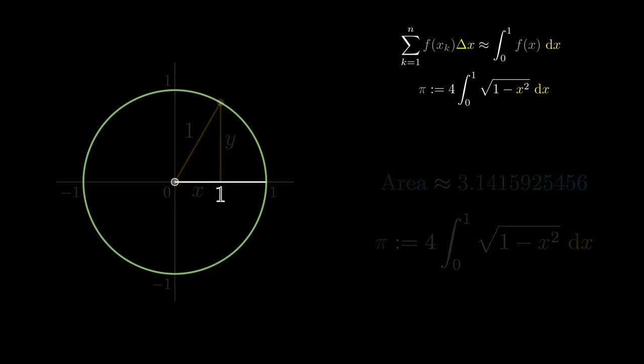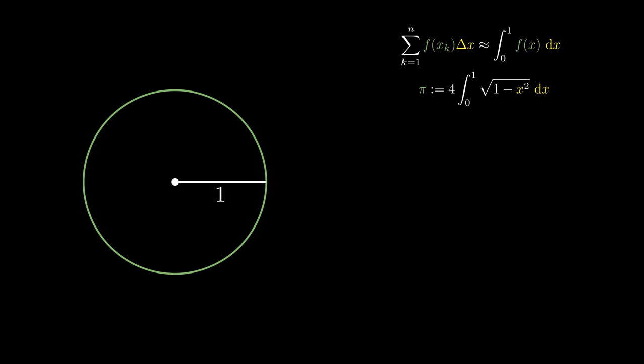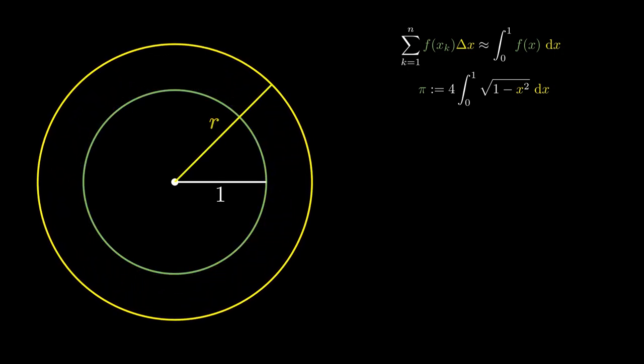Now let's consider a circle with general radius r. Since these are similar objects, the ratio of the areas is the square of the ratios of the lengths. And doing a bit of algebra gives us A(1) times r².